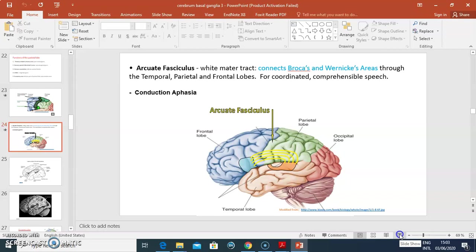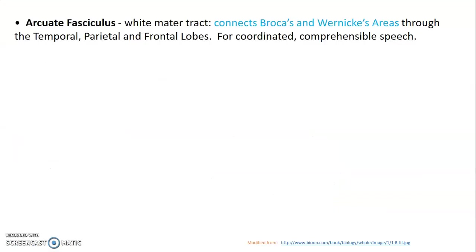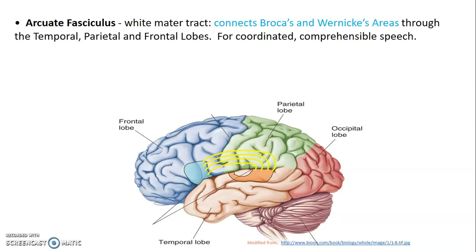We were discussing the arcuate fasciculus, which is a tract of white matter that connects Broca's area to Wernicke's area. This tract goes through the temporal lobe, parietal, and frontal lobe. Broca's area is at the inferior frontal gyrus of the frontal lobe, while Wernicke's area is on the parietal lobe at the supramarginal gyrus. This connection helps coordinate comprehensible speech, as Broca's area is for motor speech while Wernicke's is for sensory speech.